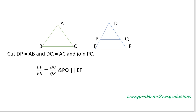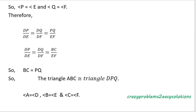Using the Basic Proportionality Theorem, DP by PE equals DQ by QF, and PQ is parallel to EF. So angle P equals angle E and angle Q equals angle F. Therefore the corresponding sides are proportional: DP by DE equals DQ by DF equals PQ by EF.